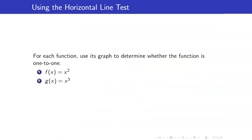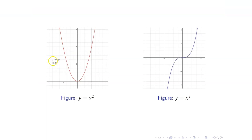Let us apply what we have just learned. For each function, use the graph to determine whether the function is one-to-one. We have two polynomials: f(x) = x² and g(x) = x³. We know that the graph of x² is a parabola. Therefore, if I draw a horizontal line there, it will intersect the graph at two points. So therefore, this is not one-to-one.